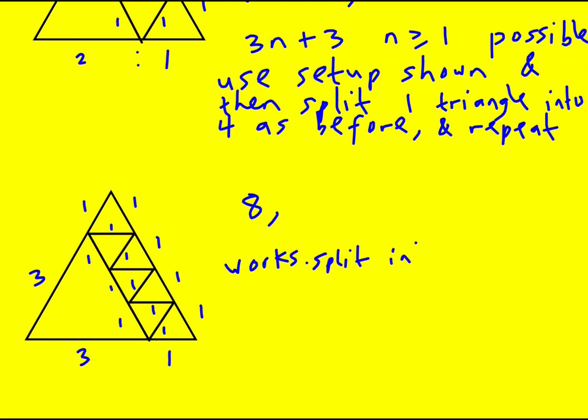And by the way I'm not saying that this is obvious to do but you can at least see that we're finding solutions. Eight works, split into three to one. And then we can use exactly this method that has worked before. Just choose a single triangle, split it now into four so that's going to make it 11, 14, 17 and so on. It's going to be 3n+5 where n is greater or equal to one possible. I'm just going to write the same approach as before.